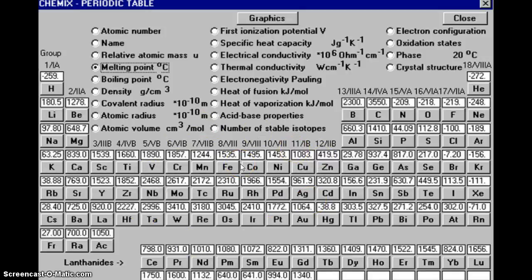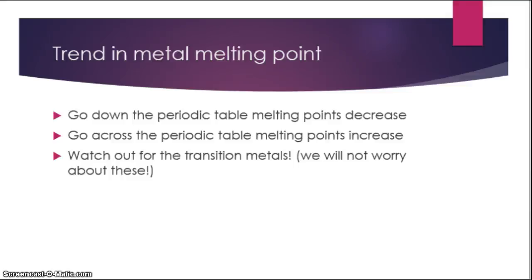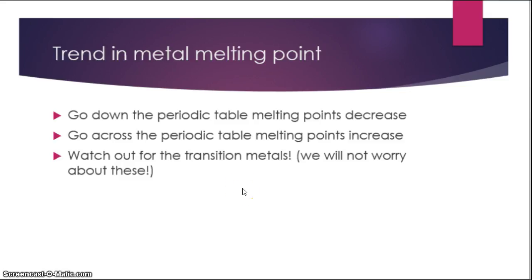There are more complicated reasons for the transition metals. We're just going to look at the alkali metals and the alkaline earth metals. As you go down, it decreases, and as you go across, it increases — and that's due to more nuclear control. As you go down the periodic table, the melting point decreases because nuclear control decreases — the atoms are getting larger and larger and it's easier to break that IMFA. As you go across the periodic table, the melting point increases because you have increased nuclear control: more protons, not so much added shielding. Watch out for the transition metals — they go up and down, so we're not going to worry about those for right now.